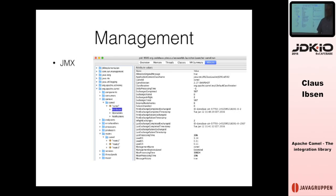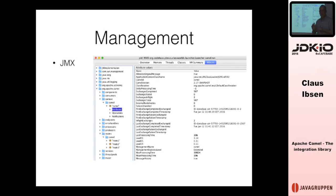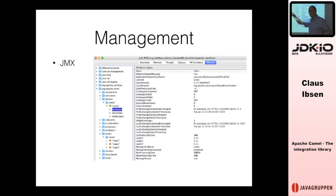Camel also allows you to manage it at runtime using JMX. When running in application servers or standalone, you can use JMX to look inside Camel — which is what Hawtio was doing. Camel provides a lot of runtime statistics via JMX: how many messages have been processed, how many failed, average processing time, minimum and maximum. You get these statistics at the Camel context level aggregated across everything, per route, and even down to each enterprise pattern within a route — helping you identify bottlenecks.